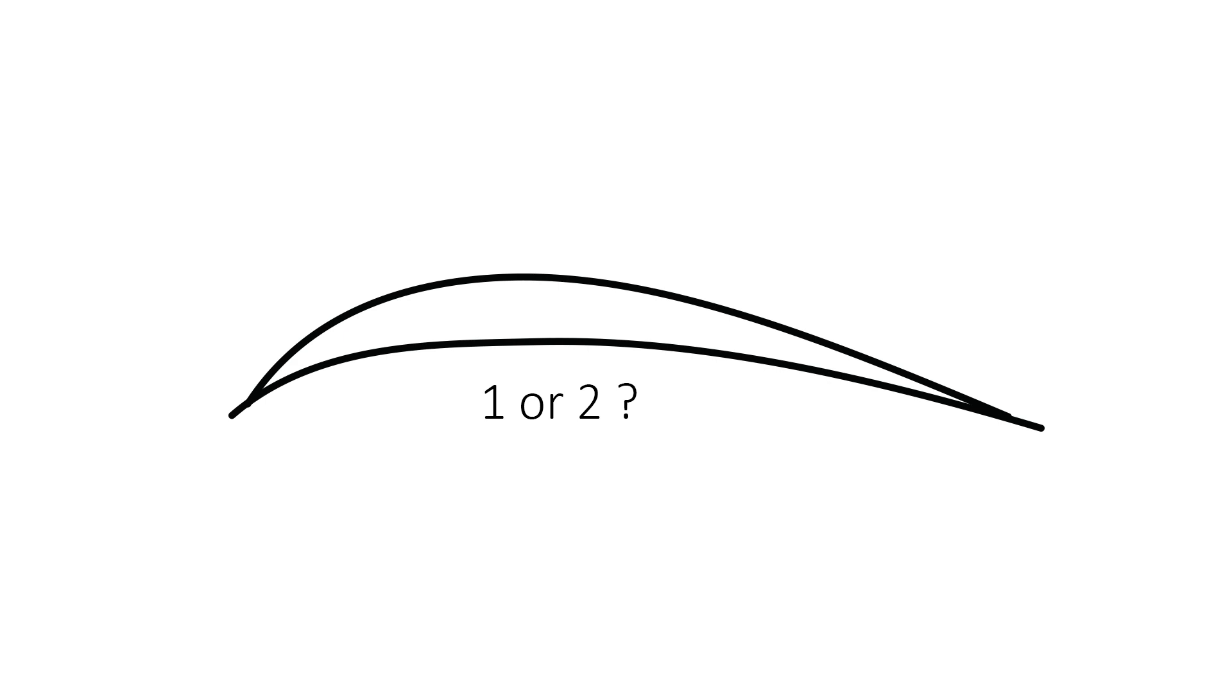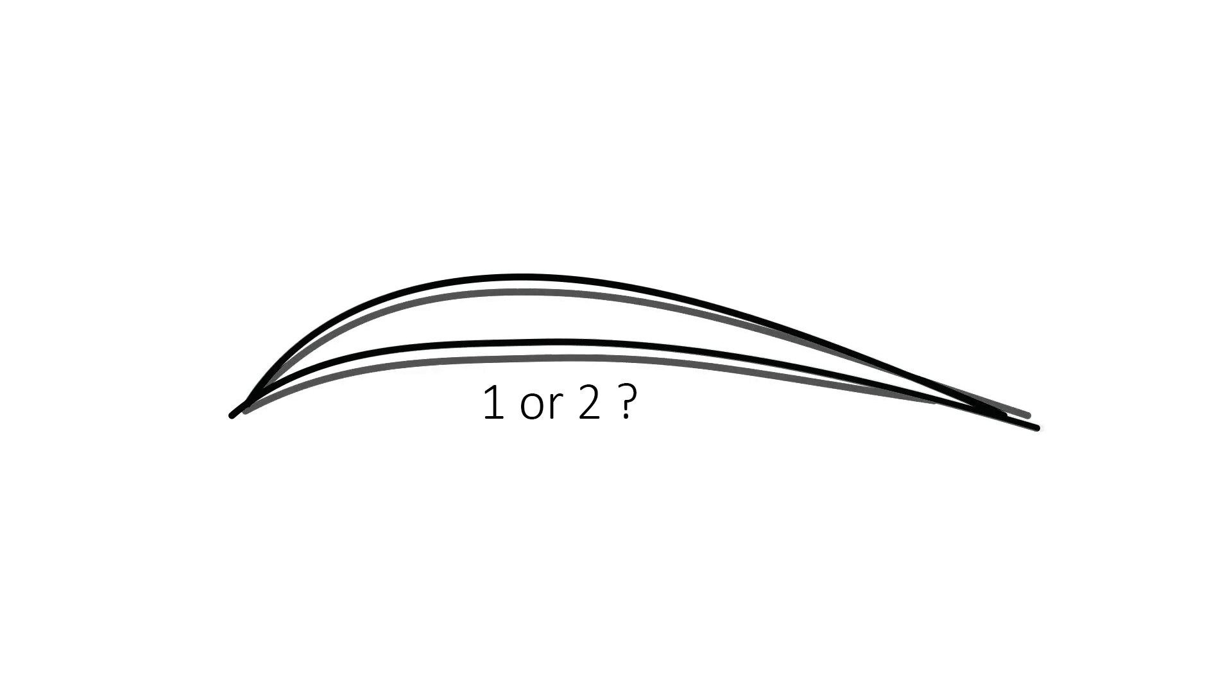Artists seek for their drawings to be unambiguous, and when drawing potentially ambiguous geometry, use additional strokes to clarify intent. We refer to this observation as strength in numbers.